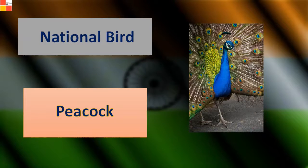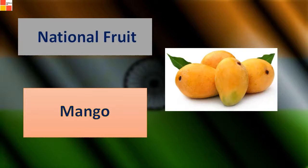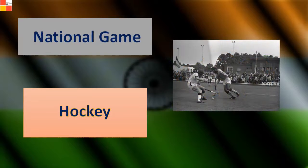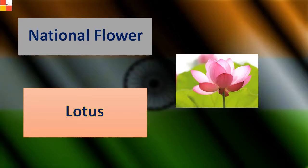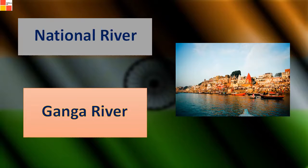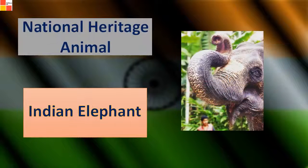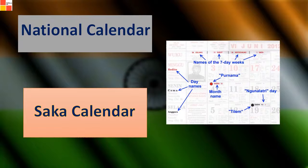National Bird — Peacock. National Heritage Animal — Indian Elephant. National Calendar — Saka Calendar. The term may also refer to the Hindu calendar.